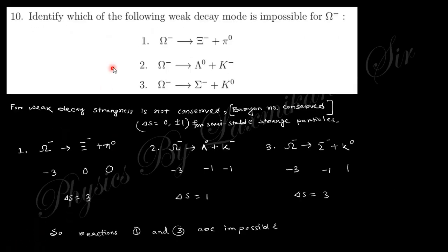Next, identify which of the following weak decay modes is impossible. For this one you can see, you know in weak decay, strangeness is not conserved. It actually is zero or plus minus one. So for every case, if you put this value of strangeness number, you can see there is ΔS equals three, there is ΔS equals one, there is ΔS equals three. So these two, one and three, are not, are impossible. Only two is possible.